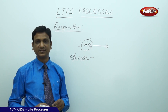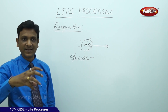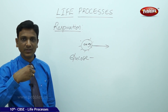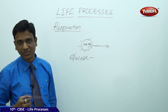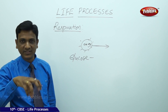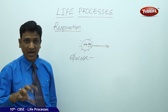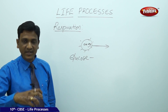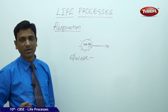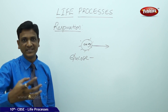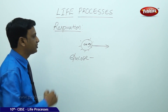Respiration is a very complex process involving different stages. Nutrition also involves many stages — obtaining food, eating, digestion (converting food to a simple form), absorption of digested material, and utilization of nutrients. In the same way, respiration also involves many stages.